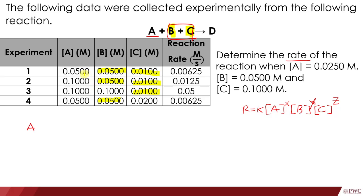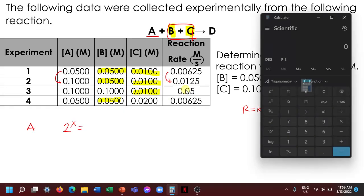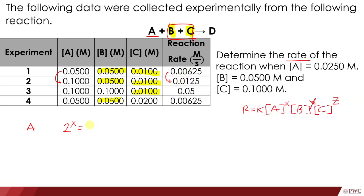Let's use experiments 1 and 2 to determine the order of reaction with respect to A. The concentration of A increased from 0.05 to 0.1, so it increased by a factor of 2 raised to some x power. The rate changed from 0.00625 to 0.0125 — that's 0.0125 divided by 0.00625, which equals 2. So 2 to the power of x equals 2, meaning x equals 1. The order of reaction with respect to A is 1.